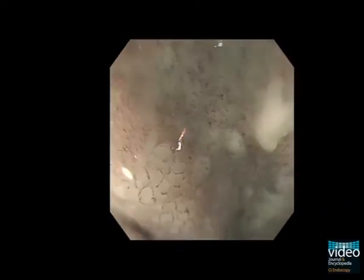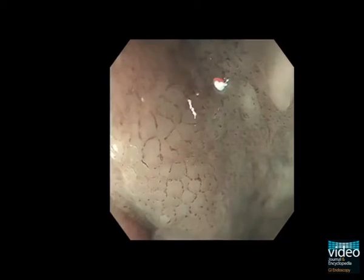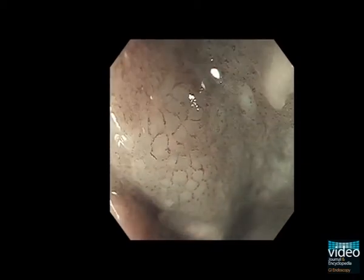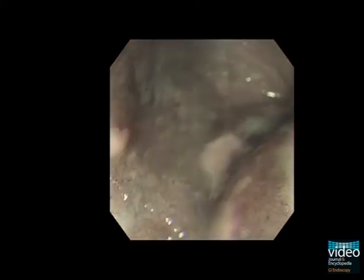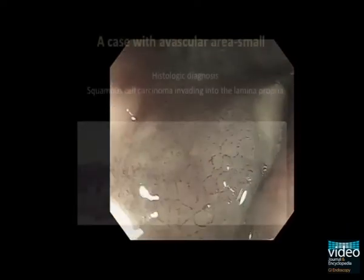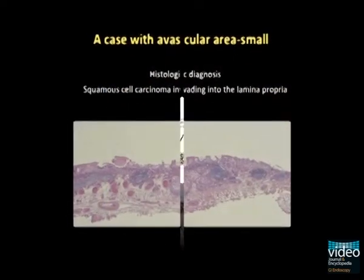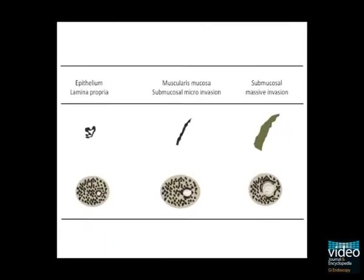Once we get closer to the lesion, we can see the honeycomb-like appearance, and at high magnification, many small avascular areas become apparent. The histologic diagnosis of the resected specimen was a cancer invading into the lamina propria.